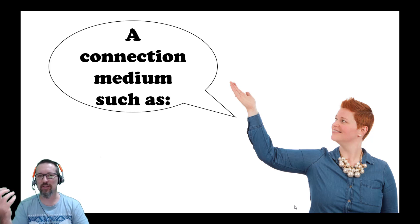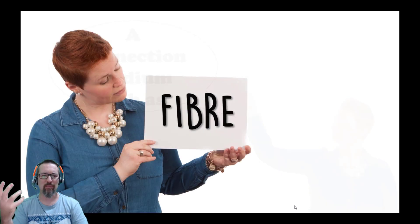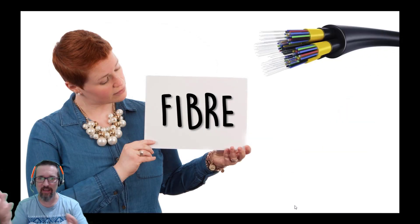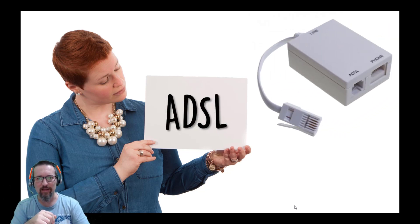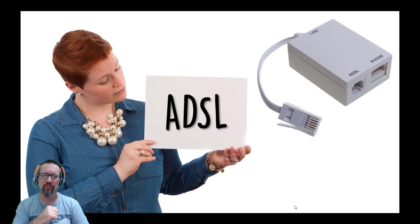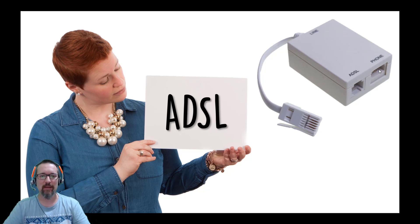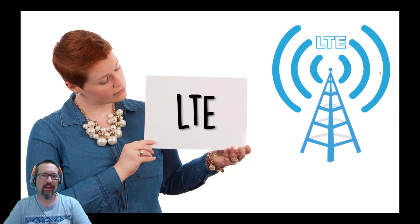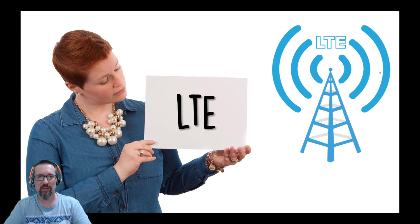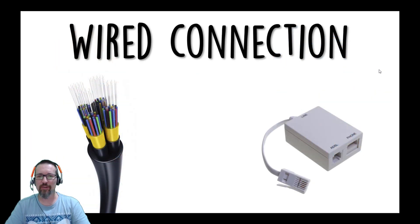You're also going to need some sort of connection medium — an actual line, like a fiber line or an ADSL line. ADSL stands for Asymmetrical Digital Subscriber Line. It works with a special filter: one line for ADSL, the other for your phone, because there are two different signals on the same line. Or you could have LTE. So there are three different methods of getting online in terms of the platform you can use.